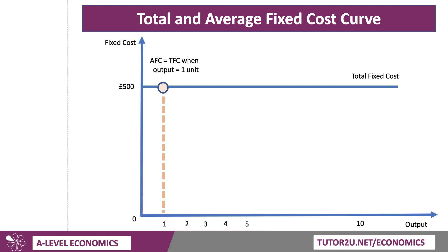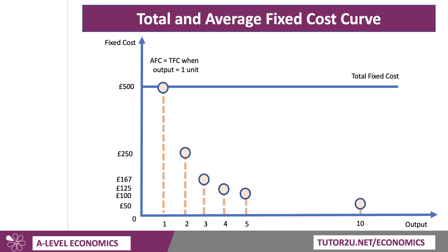But if we increase output to 2, then the average fixed cost will halve — 500 divided by 2 is 250. Likewise, divide by 3, you get 167. If the output goes up to 4, the average fixed cost falls to 125. And if output goes up to 5, then the average fixed cost falls to 100. If total fixed costs stay the same, which they do in terms of output, then the average fixed cost must keep falling. Indeed, if output goes up to 10, then the average fixed cost falls to 50 in this case.